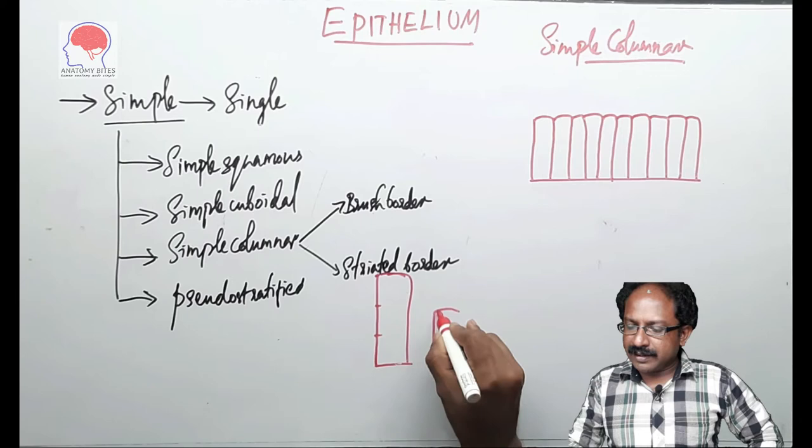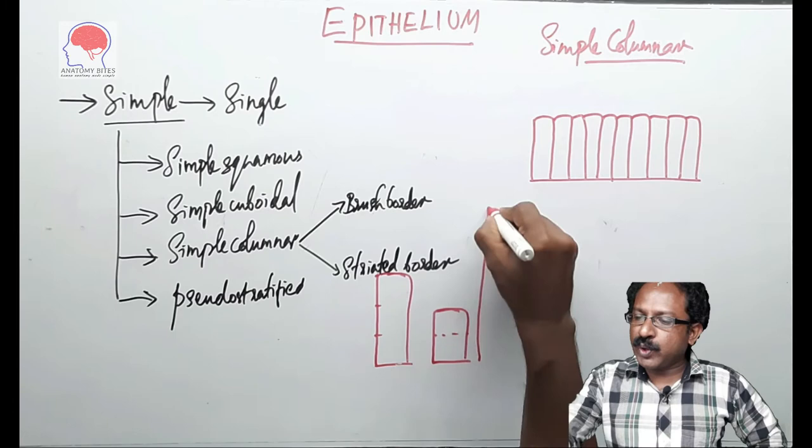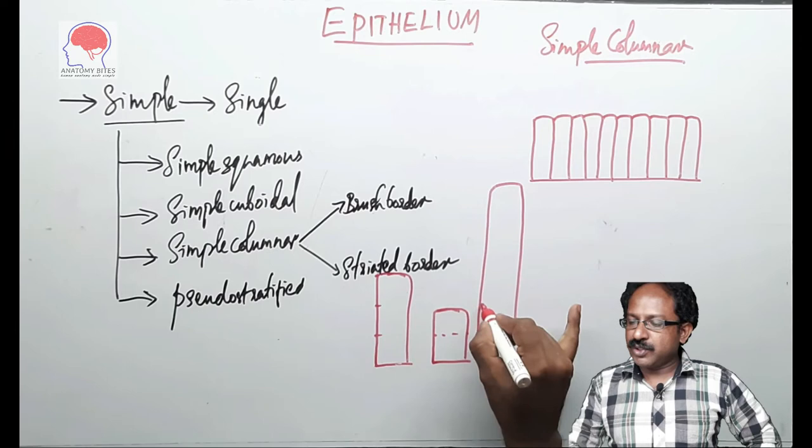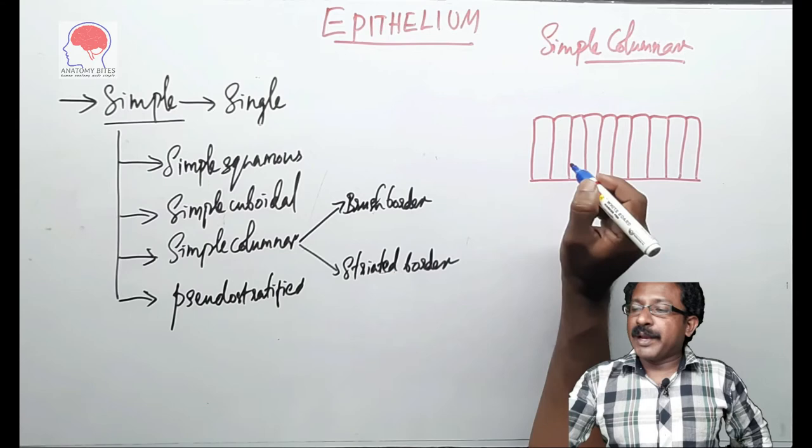If you are drawing like this, this is almost two times the height of the cell. We call this as the low columnar cell. What if it is too high? One, two, three, four and more. If it is too high, we call it as tall columnar cell, which is no typical columnar cell.